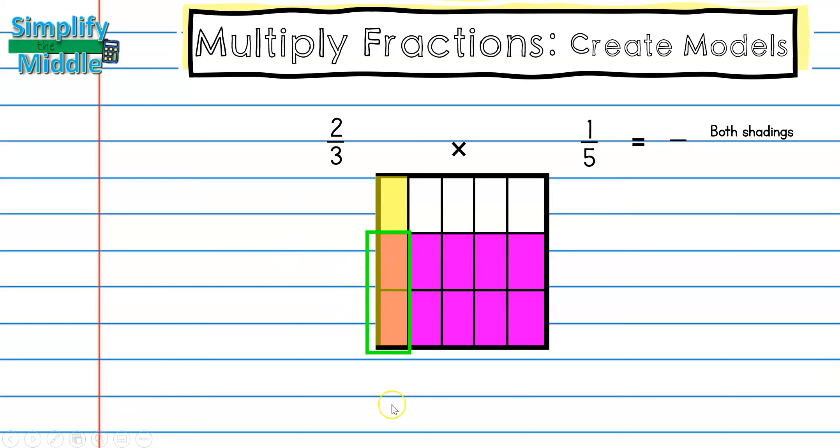Next I'm going to look at how many total boxes are here. Well, since there's five going across and three going up and down, my total boxes are 15. So my fraction two-thirds times one-fifth is going to be equal to two-fifteenths.